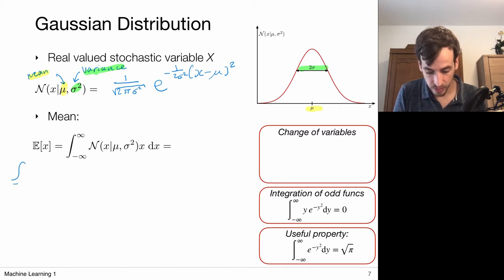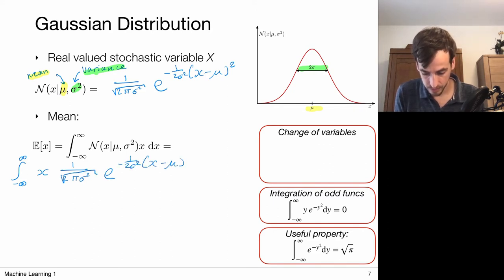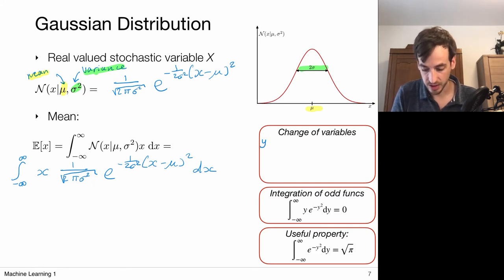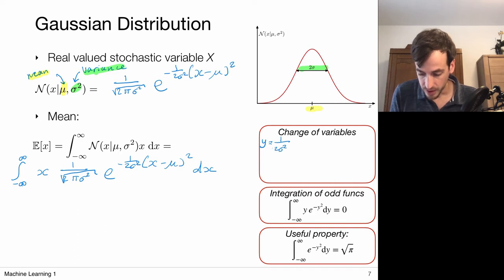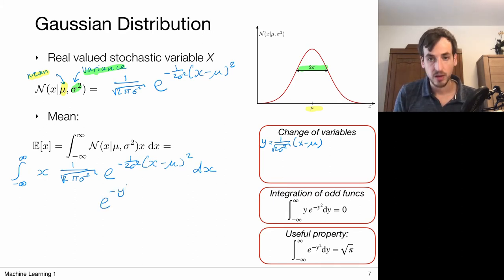We compute the integral from minus infinity to infinity of x weighted by its probability, so multiplied by this Gaussian distribution. This integral looks quite complicated, so we're going to simplify it via a change of variables. I choose y to be 1 over the square root of 2 sigma squared times x minus mu. If I insert this into the equation, then the exponential becomes e to the power minus y squared.